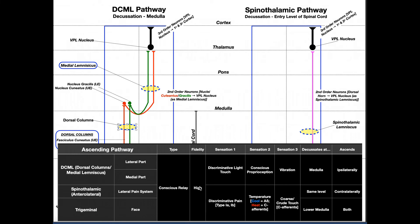All three of these are conscious relay systems, meaning we are aware of these sensations. They are also high-fidelity pathways, meaning the brain can somatotopically map them — it knows exactly where on the body the sensation occurred, whether on the arm, hand, elbow, or specific part of the forearm. Low-fidelity pathways cannot localize sensations as precisely. We'll go over the sensory homunculus concept in a separate video.